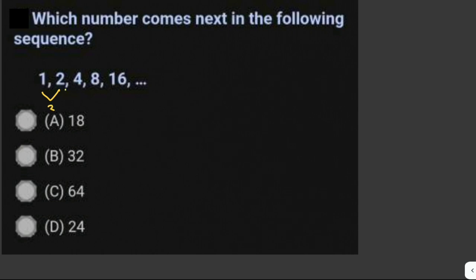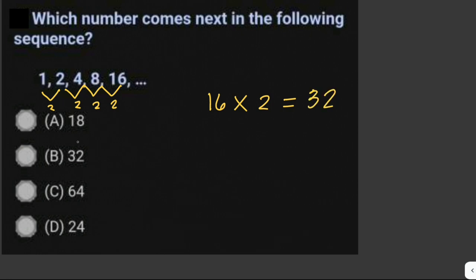So 1 times 2 equals 2, 2 times 2 equals 4, 4 times 2 equals 8, 8 times 2 equals 16, and so on. Therefore, we just multiply 16 by 2 to get the next number, which is equal to 32. The answer is letter B.